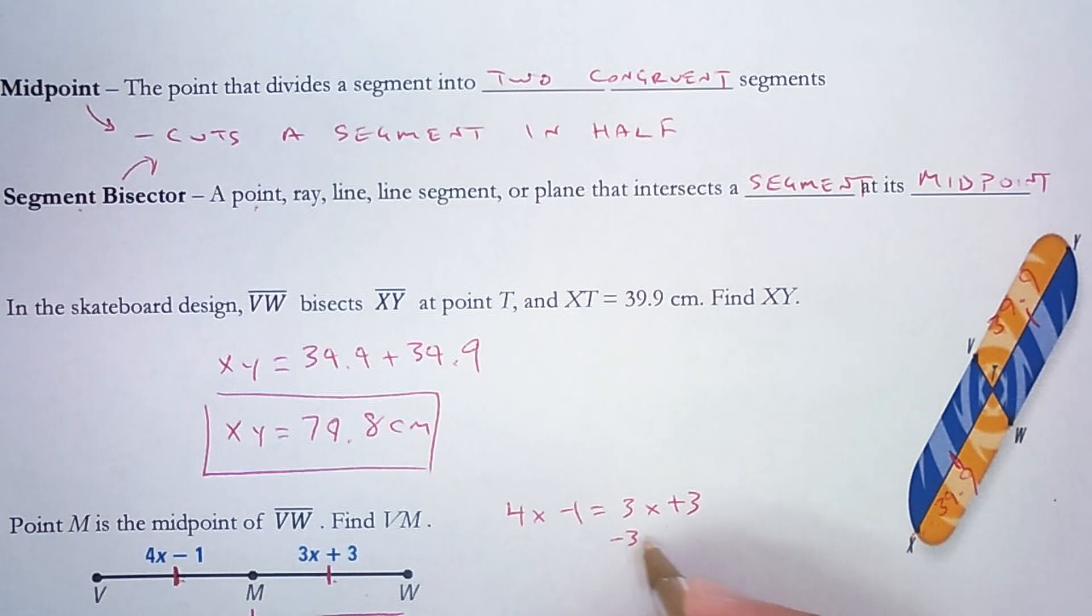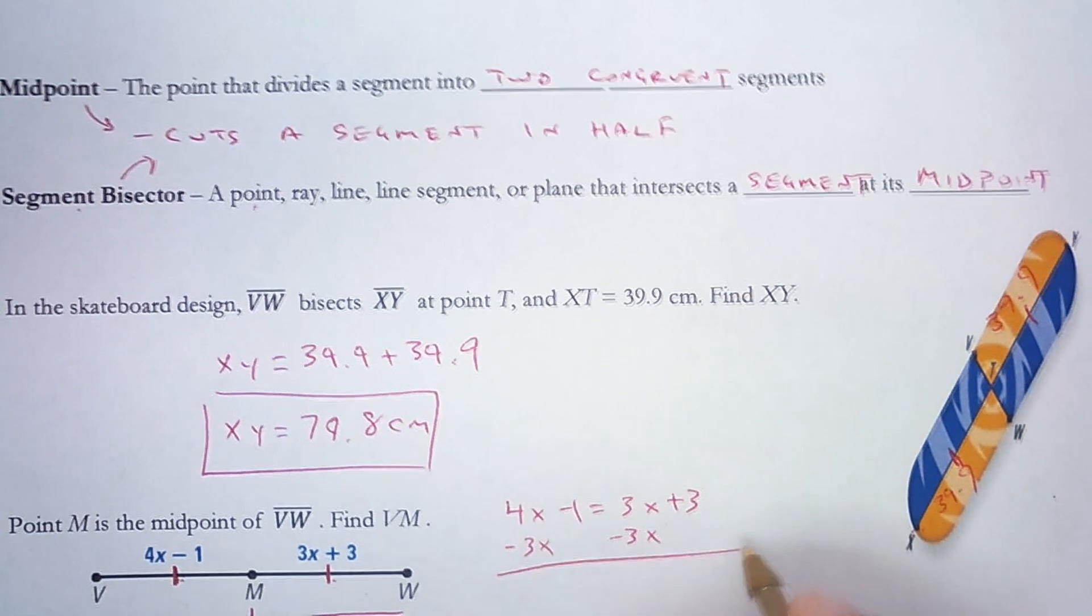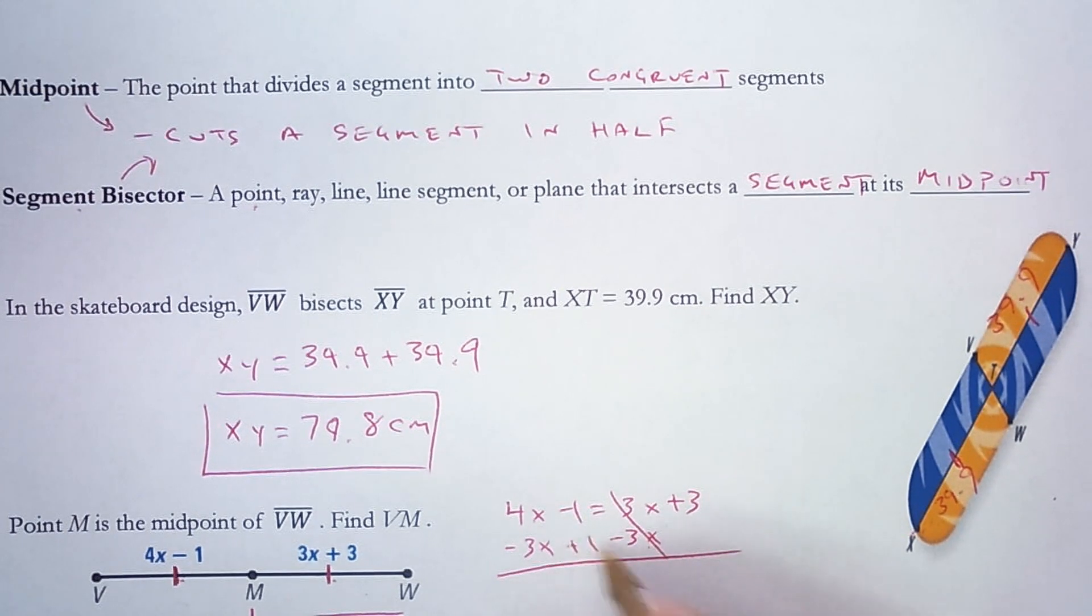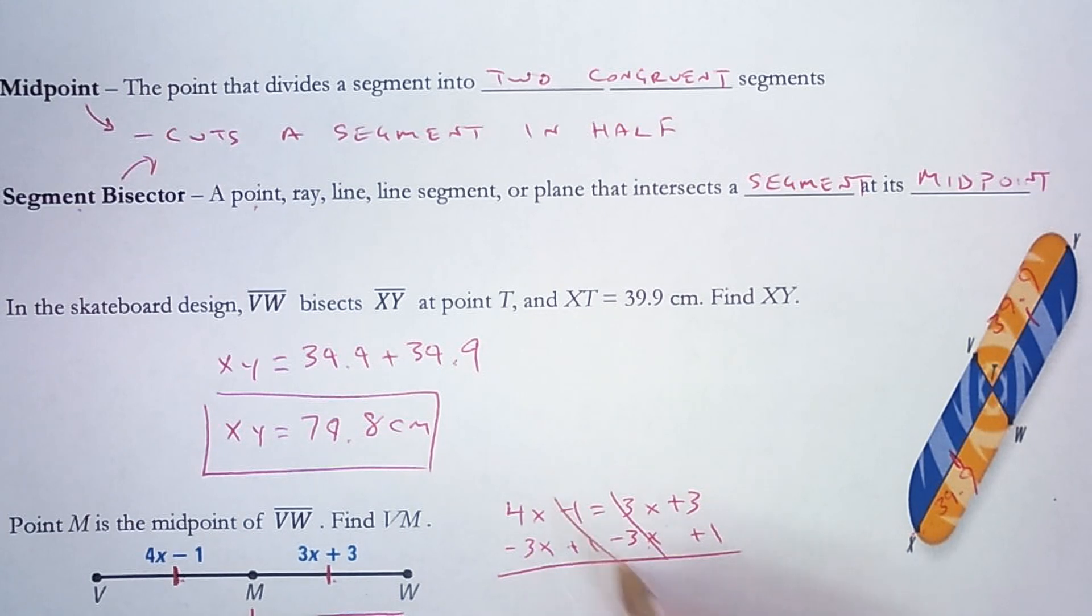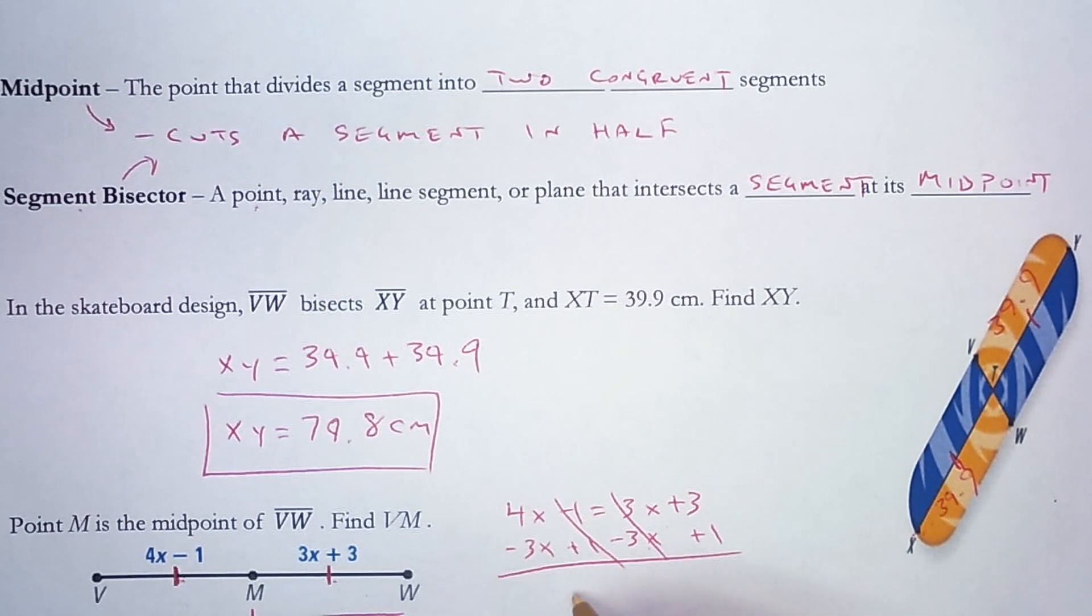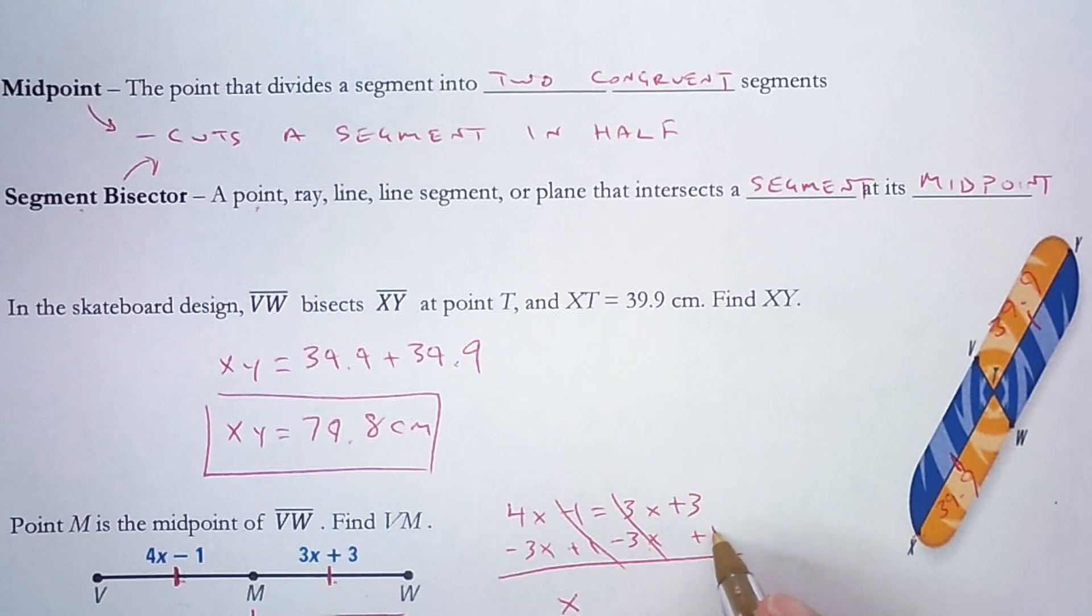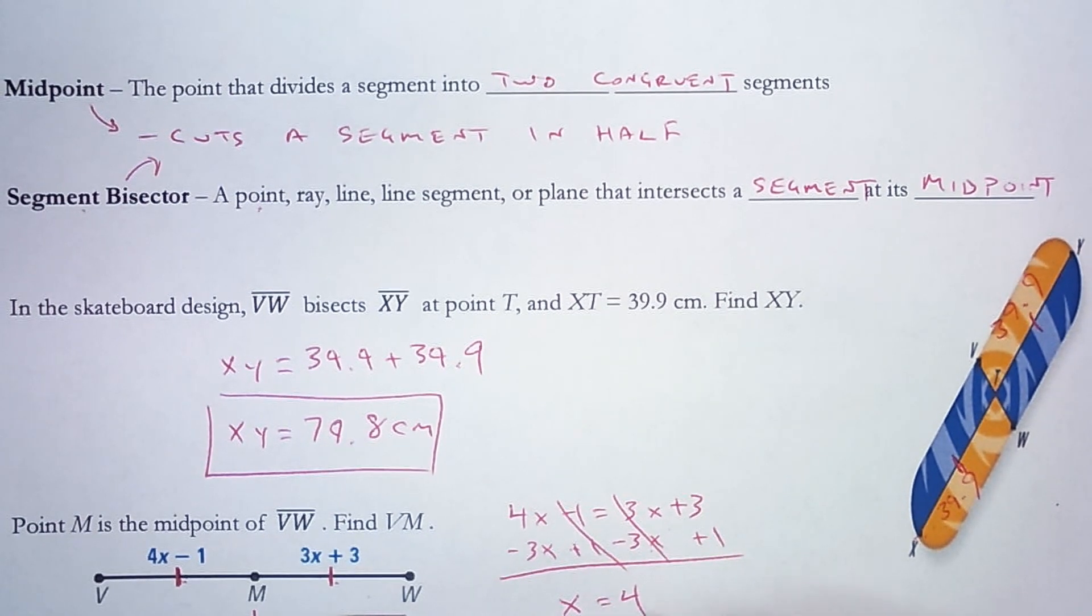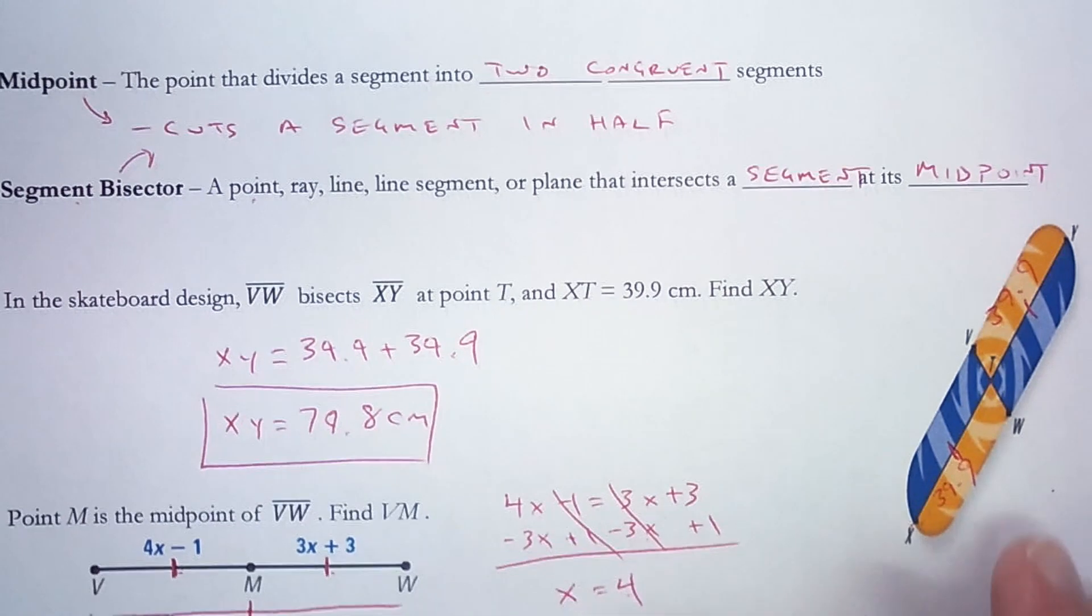So I will subtract 3x from both sides. And since I canceled out the variables here, I am going to cancel out the constant on the other side. So 4x minus 3x is 1x. 3 plus 1 is 4. So we have the value of x. And sometimes it's really tempting to stop once we have the value of x. This does not say find the value of x. It says find the length of VM. The value of x is something we had to do in order to get there.